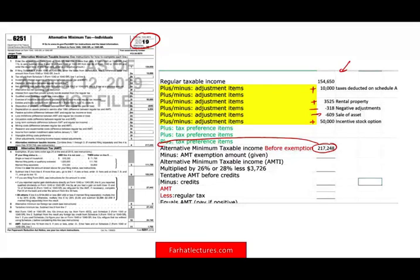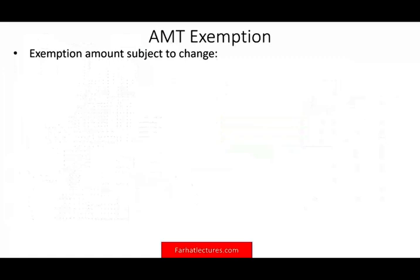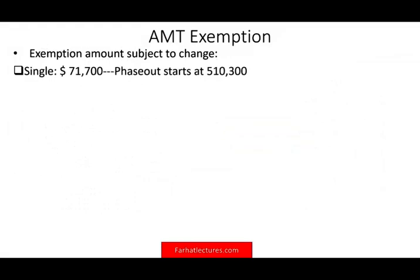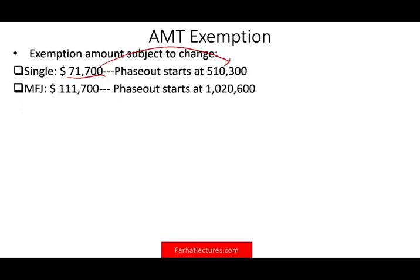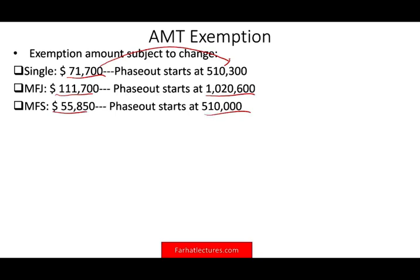Let me show you the exemption amounts more clearly. For single filers, the exemption is $71,700, but you will start losing part of that exemption when your AMTI exceeds $510,300. For married filing separately, the phase-out starts at $510,300 as well.